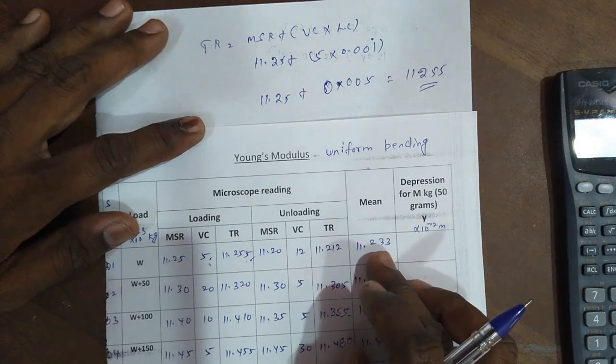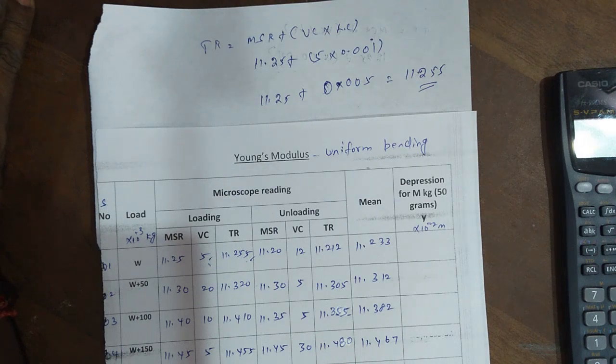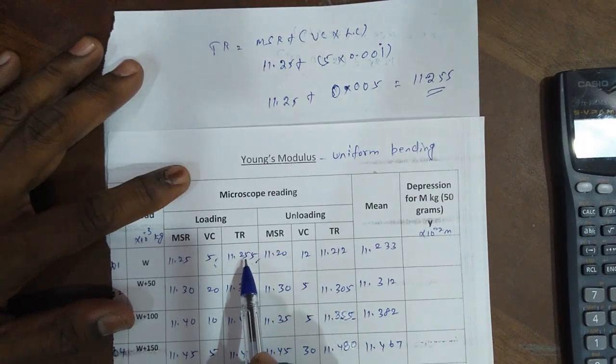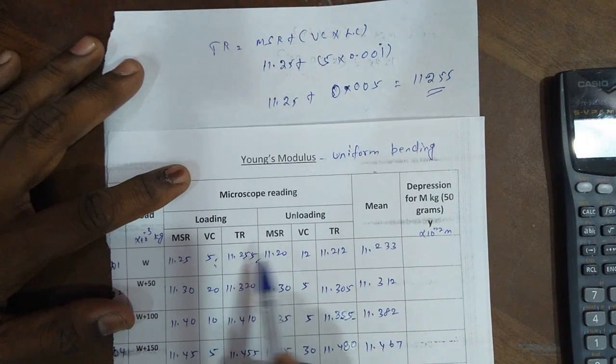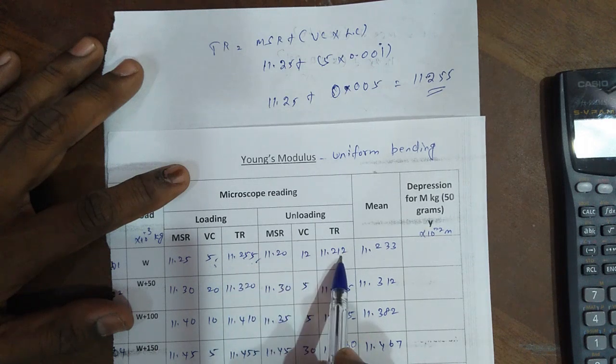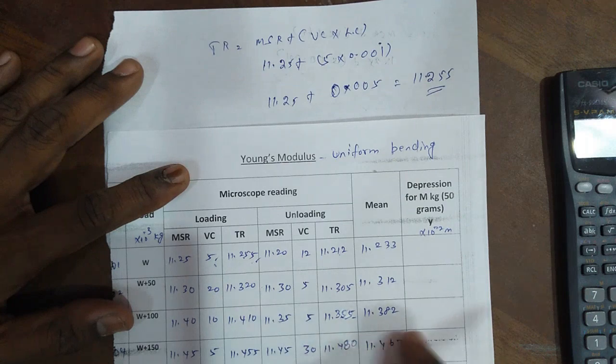Finally, what are the mean values? The mean value for the total reading for loading value and total reading for unloading value. So add those two values, divide by two, you got the mean values.